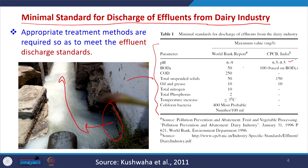The pH should be in the range of 6.5 to 8.5, BOD should be less than 100, and total suspended solids less than 150. The World Bank has given standards requiring pH between 6 to 9, BOD less than 50, and more recently BOD less than 30. COD is 250 per World Bank standards and 100 in India. Total phosphorus, total nitrogen, and oil and grease are also important parameters for dairy industry wastewater treatment.